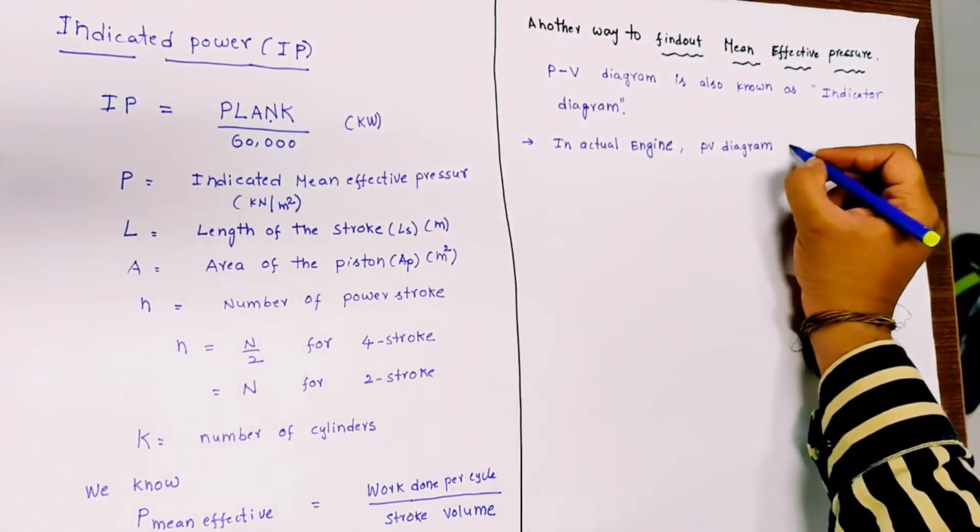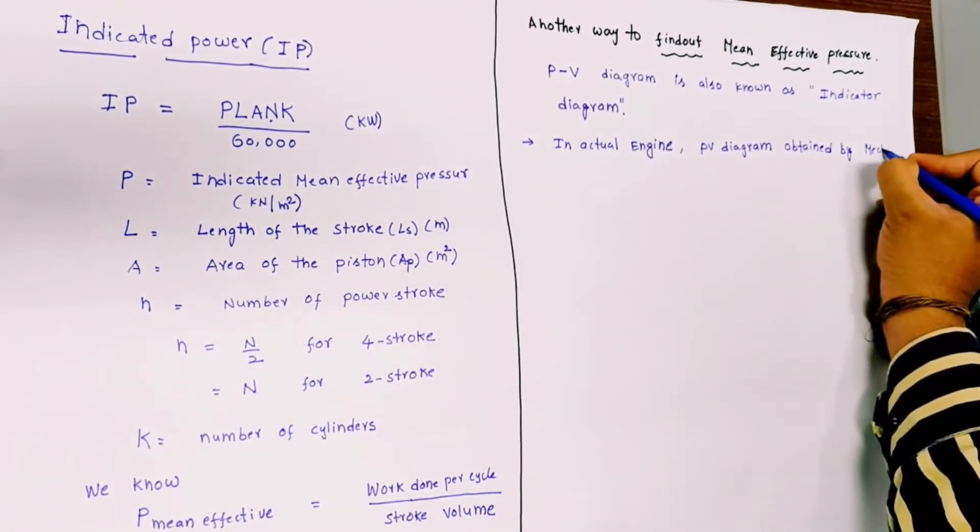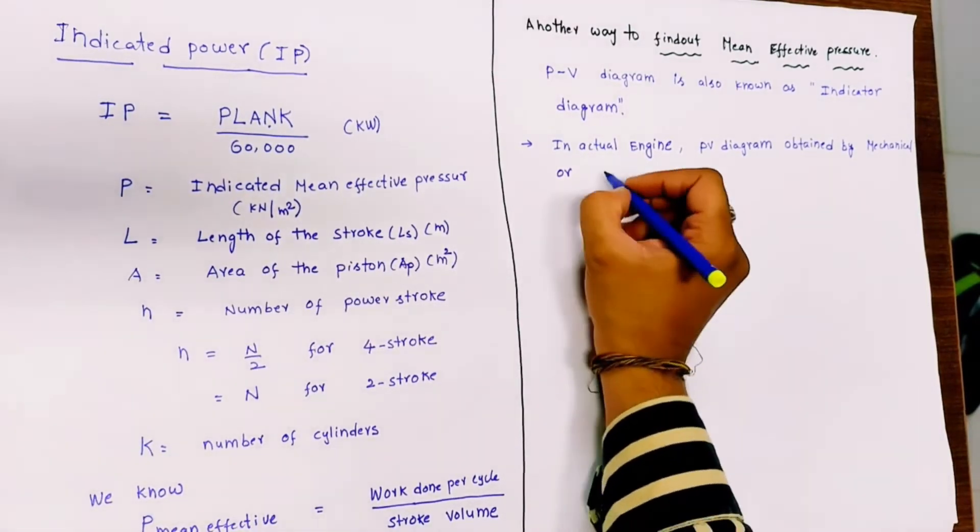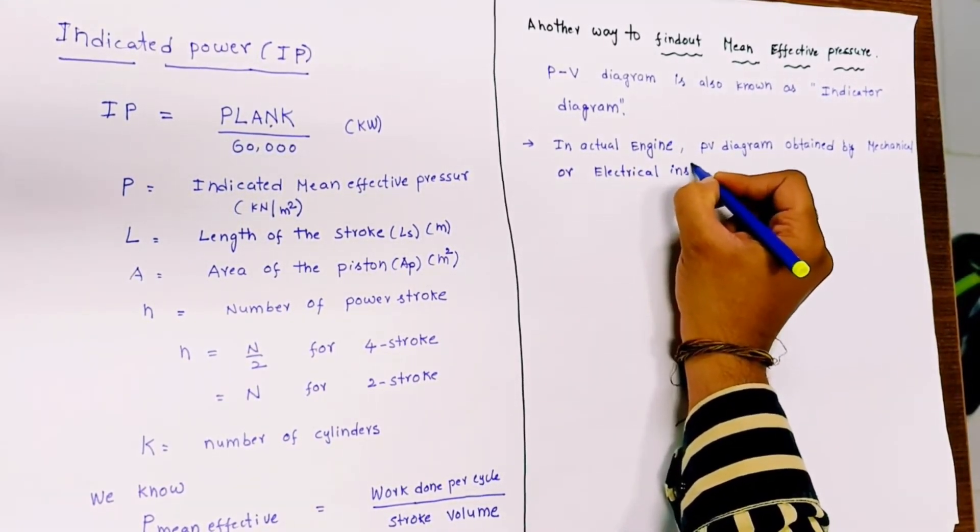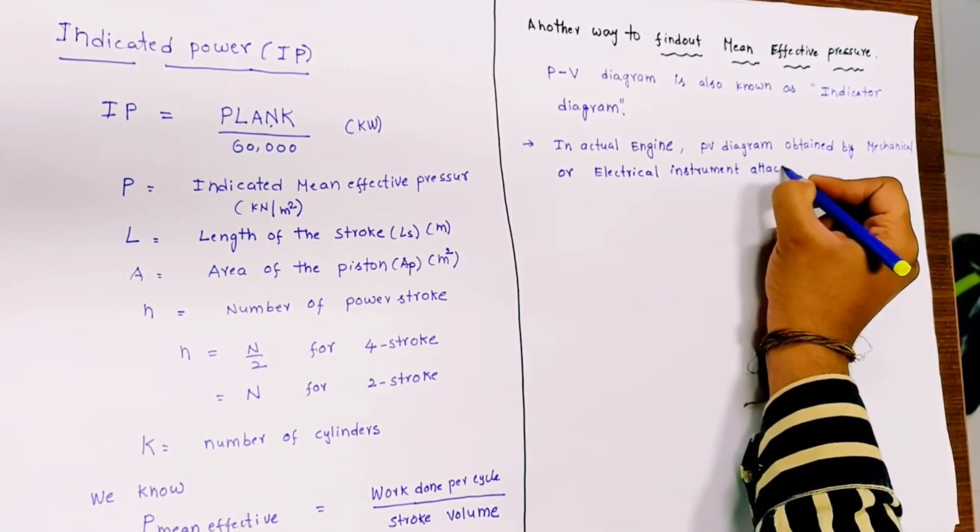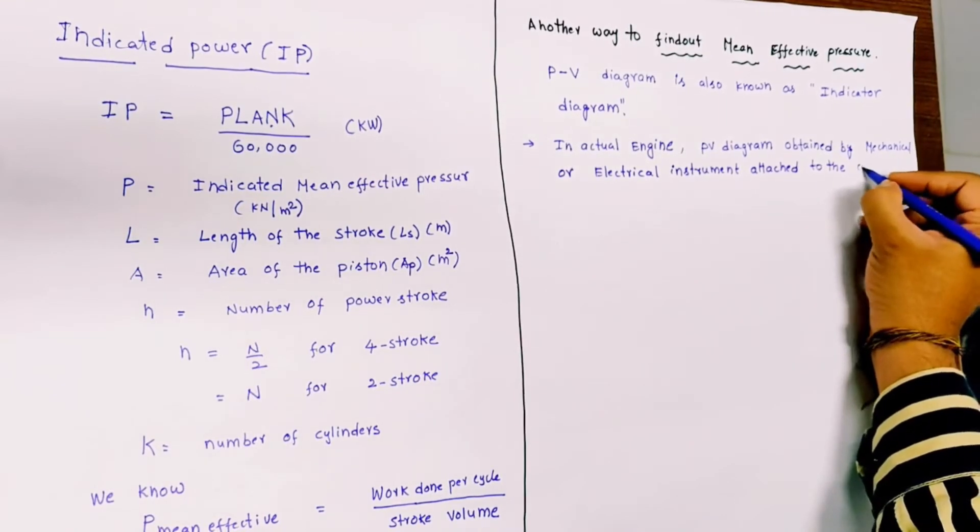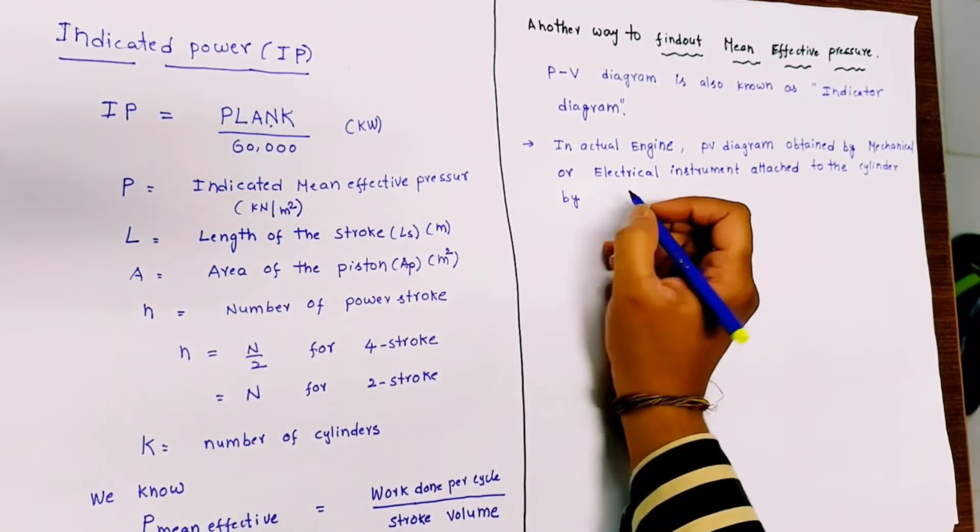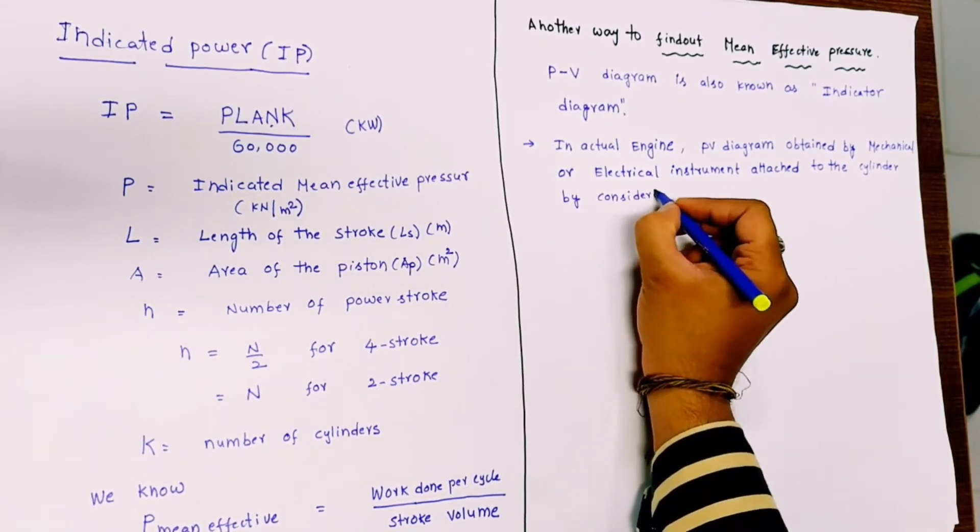The indicator diagram is obtained by a mechanical or electrical instrument attached to the cylinder, by considering the spring constant. That means we have to consider that spring constant in the arrangement.